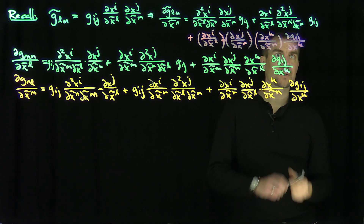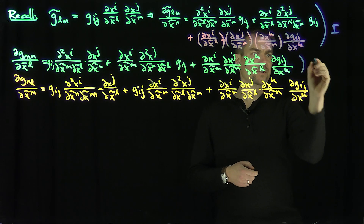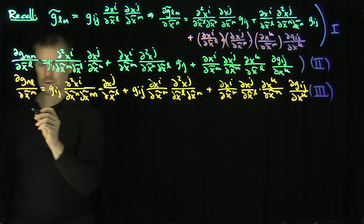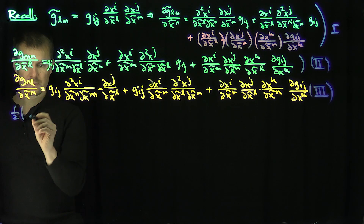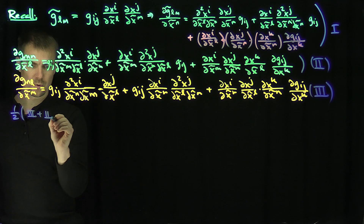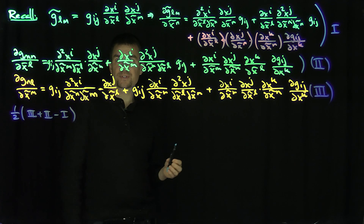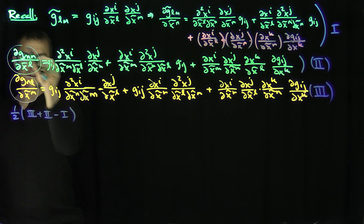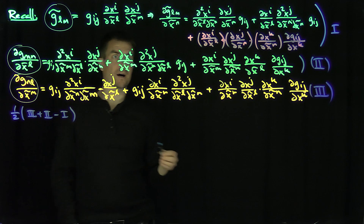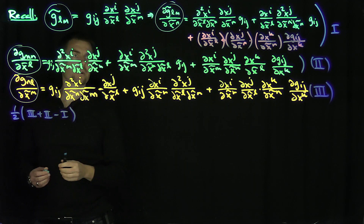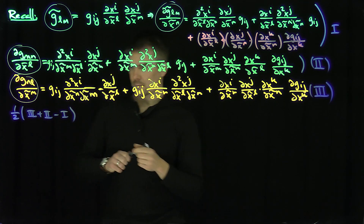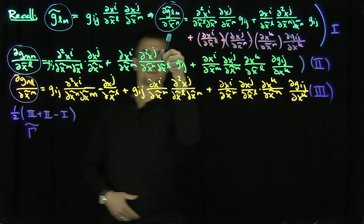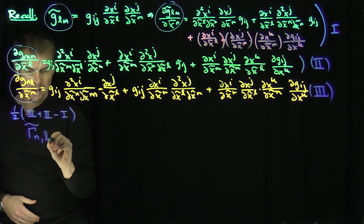Now I'm going to call these equations one, two, and three respectively. And I want to compute one-half of equation three plus equation two minus equation one. Those three things together give me the transformation law for Γ̃_NLM — the lower Christoffel symbol with lower indices N, L, M.